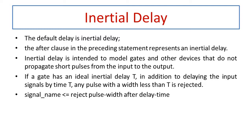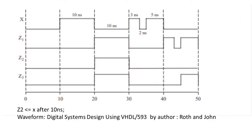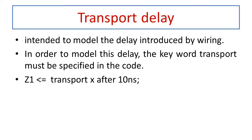The syntax is written as: signal name <= reject pulse_width after delay. For the transport delay example shown, z1 is the same as x but shifted by 10 nanoseconds. For the first 20 nanoseconds the value is 0, then 1, then 0, and then pulses of 3, 2, and 5 nanoseconds. The given input signal is simply delayed by 10 nanoseconds, illustrating transport delay.